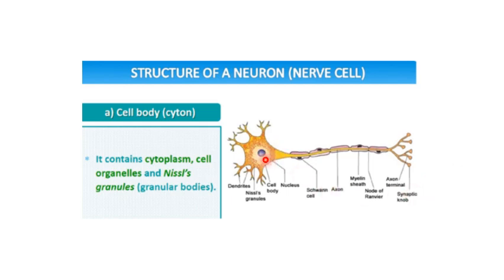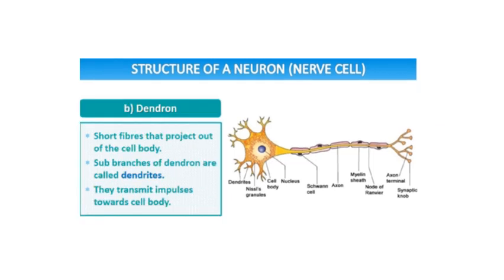So these are the three parts — the cell body, the dendrites, and the axon. The cell body is also called the cytone and it contains the cytoplasm, cell organelles, and Nissl's granules, that is the granular body. Then we have the dendron. These are the dendrites which are present — basically short fibers that project out of the cell body. Their sub-branches are called dendrites. They transmit impulses towards the cell body, collecting all the information and transmitting it to the cell body.